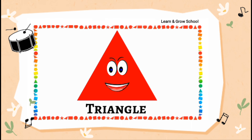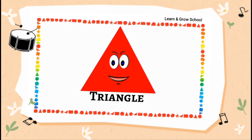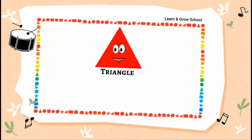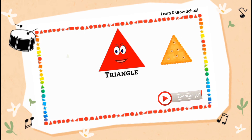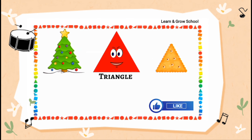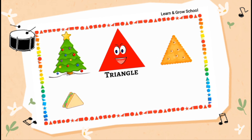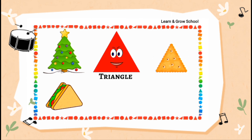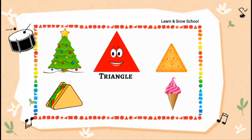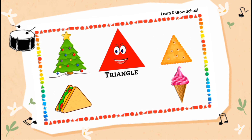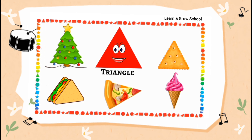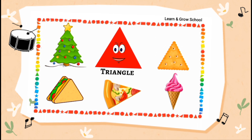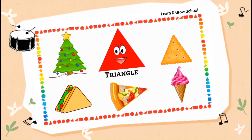You can find me anywhere around your surroundings. For example, you can eat me as a crunchy cracker. You can decorate me as a Christmas tree. You can relish me as a sandwich. You can enjoy me as an ice cream cone. You can eat me as a pizza slice. All these objects can be seen in the shape of a triangle.